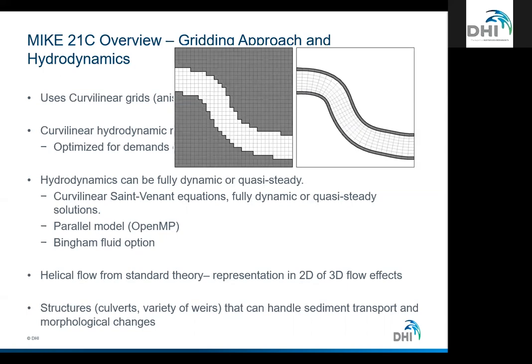One of the things that makes MIKE 21C unique is we have this helical flow from standard theory, which accounts for the 3D effect of flow going around a bend — you get helical, cylindrical currents occurring. It's a 3D flow effect, but we represent it in 2D using standard approaches. We also can use a variety of structures — culverts, weirs — handled as 1D structures, solving standard 1D equations and integrated fully into the model including sediment transport and morphological changes.